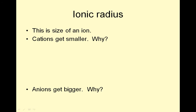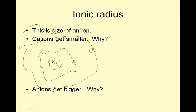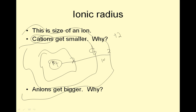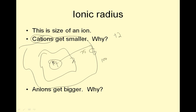Ionic radius is the size of an ion. Cations get smaller. Why? If I have a nucleus with 10 positives and electrons in shells — 2, 8, 2 — if my cation becomes plus 2, my size changes from, say, 100 to 75 because I lose the whole shell — an entire energy level. Cations get smaller because they lose entire energy levels. An energy level can also be called a shell.